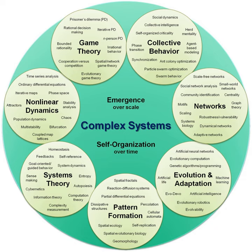Complex systems are systems whose behavior is intrinsically difficult to model due to the dependencies, competitions, relationships, or other types of interactions between their parts or between a given system and its environment. Systems that are complex have distinct properties that arise from these relationships, such as nonlinearity, emergence, spontaneous order, adaptation, and feedback loops, among others.